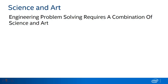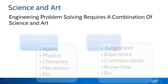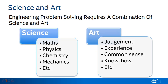Problem solving requires a combination of science and art. On the technical side, we have math, physics, chemistry, mechanics, etc. And on the artistic side, we have things such as judgment, prior experience, common sense, know-how, and so on.